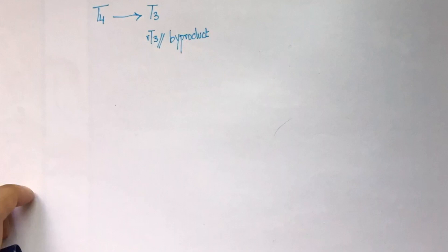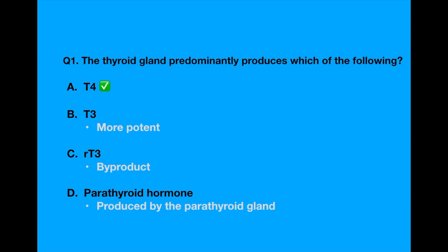RT3 is a by-product of this reaction. Parathyroid hormone is produced by the parathyroid gland. It helps in regulating the levels of calcium in our body.